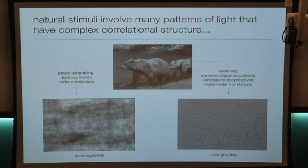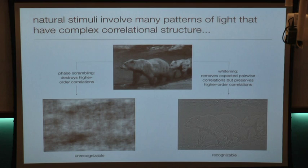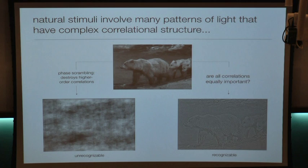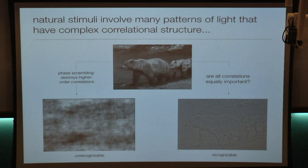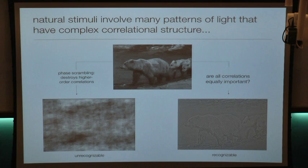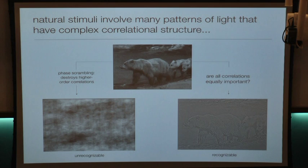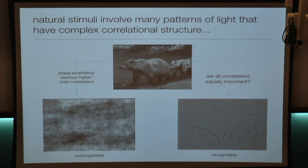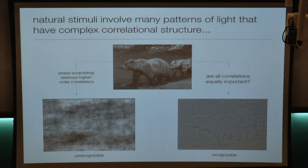We know that higher-order correlations are important for visual processing because if we remove them from an image we no longer understand what we're seeing. The question then becomes: are all correlations equally important? Should we devote resources to processing some correlations preferentially over others? What we're doing in whitening the image is flattening the power spectrum — removing the average power spectrum removes average pairwise correlations but preserves higher-order correlations, which are contained in the phases. Scrambling the phases while preserving the power spectrum yields an image that loses quite a bit of structure.